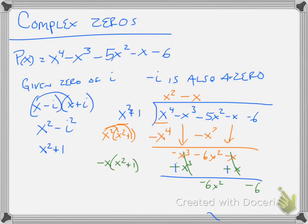Then I'm going to multiply by negative 6. Multiply that through: negative 6 times x squared plus 1 becomes negative 6x squared minus 6. Go through and change the signs. Now, because those were factors, this should come out to 0 — they cancel out, and it should have a remainder of 0.